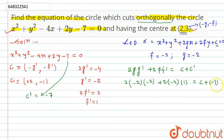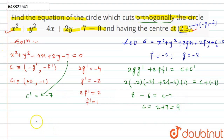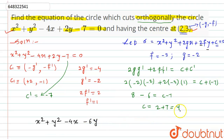Solving: 2×4 = 8, and 2×(-3)×1 = -6, so 8 - 6 = c + (-7), which gives 2 = c - 7, so c = 9. Therefore the required equation of the circle is x² + y² - 4x - 6y + 9 = 0. This is our required answer.